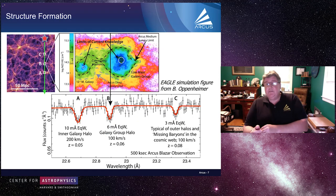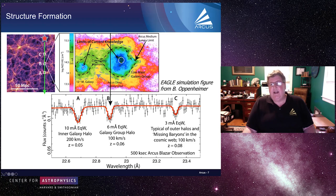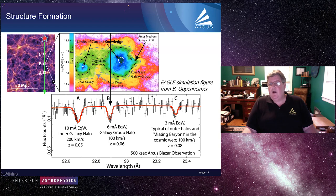We use bright background sources — AGN shown as a red star — shining through halos of material. Imagine the AGN passing through three knots of material A, B, and C. If B is passing by a low-mass galaxy group, it will go through that halo and we'll detect absorbed oxygen VII in the spectrum — perhaps a 6 milli-angstrom equivalent width. By making multiple observations of many different sources, we pick up absorption features from halos at various redshifts.